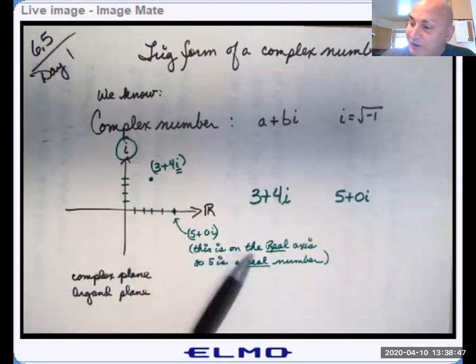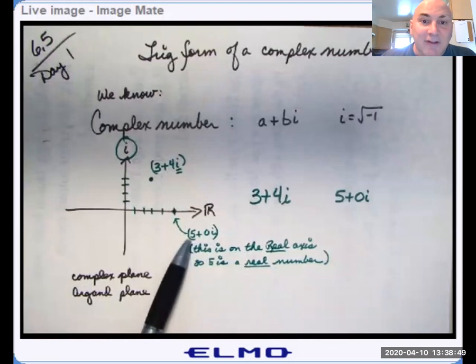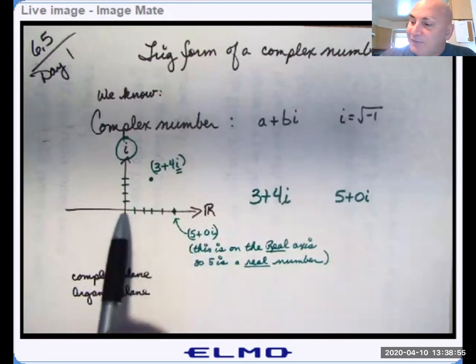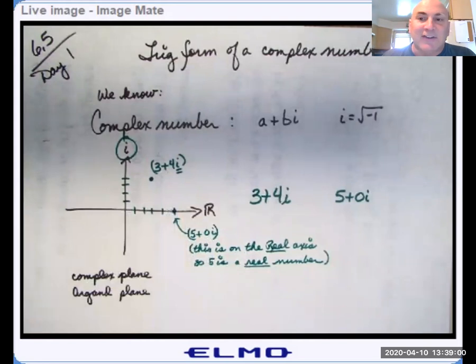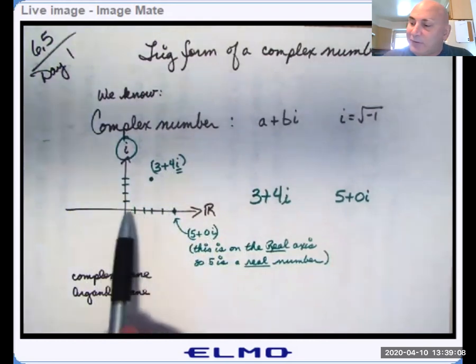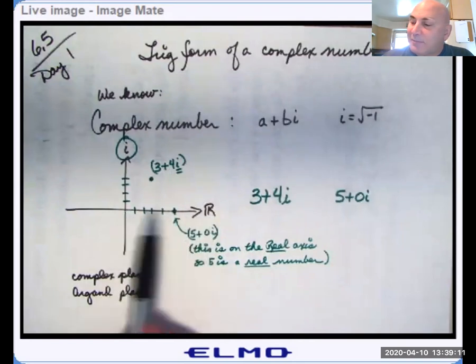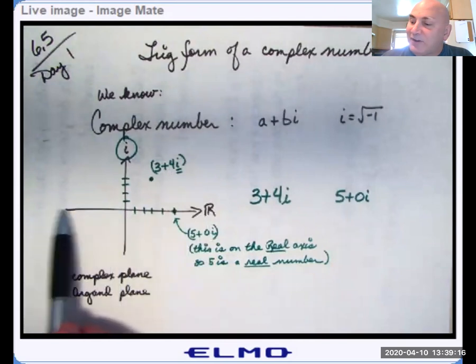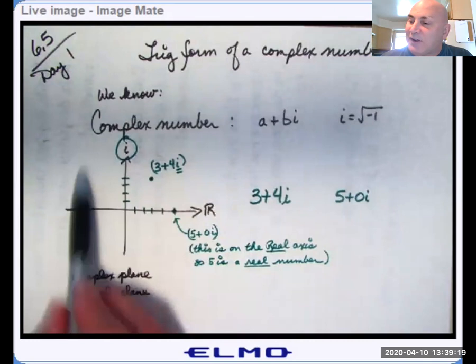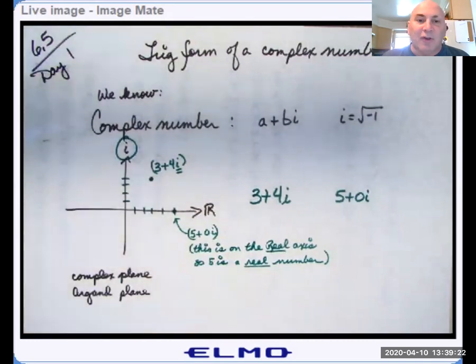If you have the real number five, you can write it as five plus zero I. Now that's five units on the real axis, zero units in the imaginary axis. Since it's on the real axis, you know that it's a real number. So you notice the real numbers are either positive, in the positive side of the real axis, and negative numbers are on the negative side of the real axis. Everywhere else up here and down here, those are imaginary numbers.